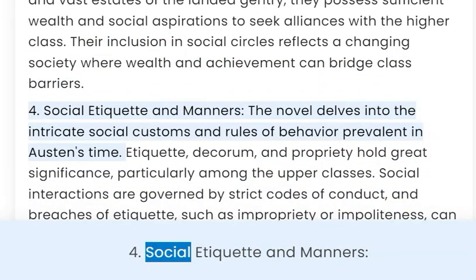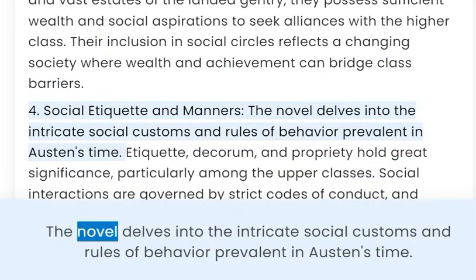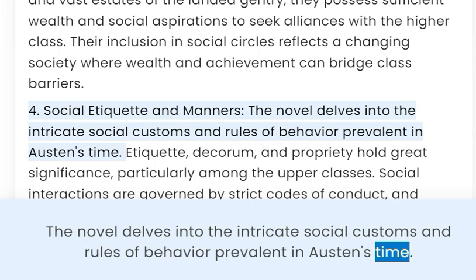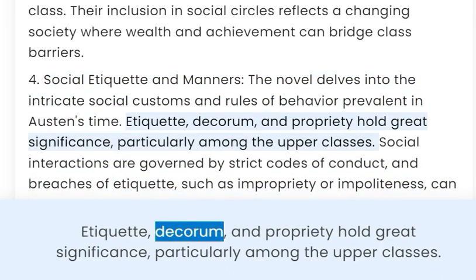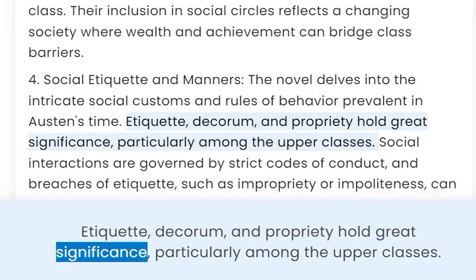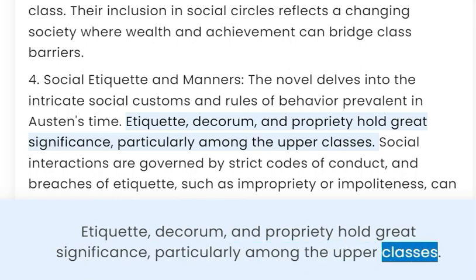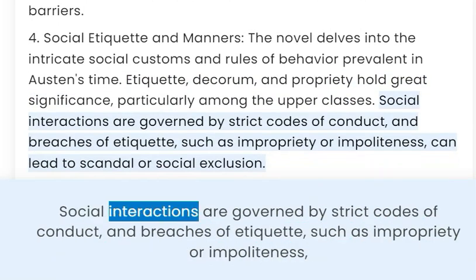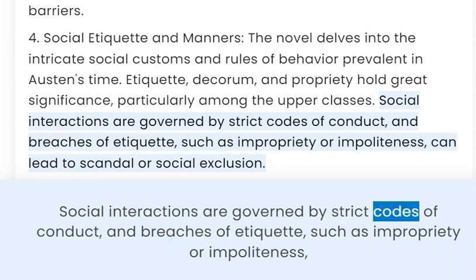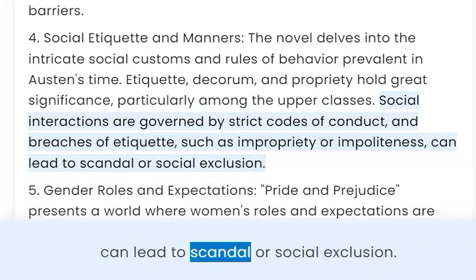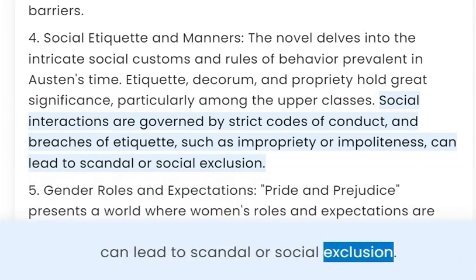4. Social Etiquette and Manners. The novel delves into the intricate social customs and rules of behavior prevalent in Austen's time. Etiquette, decorum, and propriety hold great significance, particularly among the upper classes. Social interactions are governed by strict codes of conduct, and breaches of etiquette — such as impropriety or impoliteness — can lead to scandal or social exclusion.